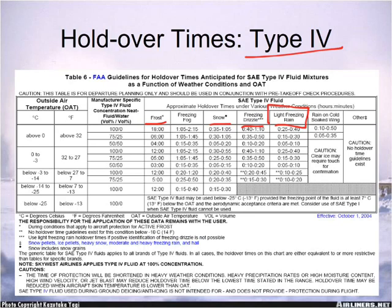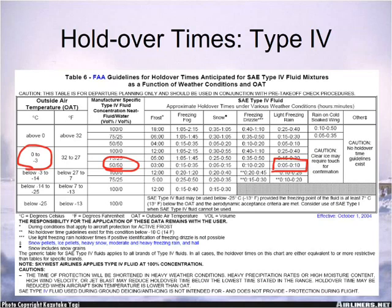With this information on the timetable, depending on our mixture of fluid — let's say in this example it's 50-50, and it's between 0 and 3 degrees Celsius — if we have light freezing rain happening, we have between a 5 to 10 minute holdover time only. That means between when the application starts on the airplane and when it takes off, we have between 5 to 10 minutes. That's a range of time given.